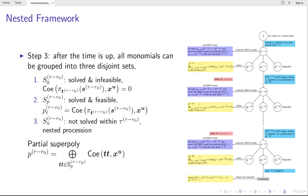So, after the time is up, all monomials in S_2^(R-R_0) can be grouped into three disjoint sets. In the first case, the MILP model for this monomial is solved and infeasible. Then, we know the monomial has no contribution to the final Super-Polys. In the second case, the MILP model for the monomial is solved and feasible. Then, we can extract the partial polynomial from this monomial.